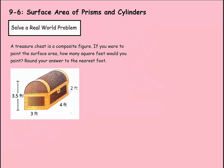Now we can solve a real-world problem. A treasure chest is a composite figure. If you were to paint the surface area, how many square feet would you paint? Round to the nearest foot. This is a prism with a half-cylinder on top. The prism has a bottom base but no top base, so instead of 2B we only use B in the formula: B plus P times H.